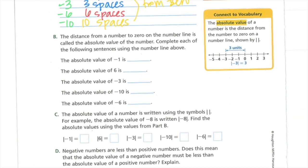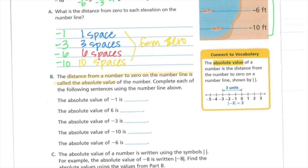The distance from a number to 0 on a number line is called the absolute value. So distance from a number to 0 is the absolute value. Complete each of the following sentences using the number line above. The absolute value of negative 1 is, well remember, absolute value is just the distance from 0. And we said negative 1 was 1 space, so it would be 1. The absolute value of 6 is 6 because it's 6 spaces from 0. Absolute value of negative 3 was 3 spaces, so it's 3. Absolute value of negative 10, and the absolute value of negative 6. Remember, it's just the distance from 0.